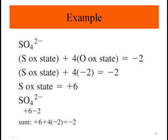We have one atom of sulfur plus four atoms of oxygen. Four times minus two is minus eight. For the total to equal minus two, sulfur must be plus six. Since sulfur is above oxygen on the periodic table, oxygen takes priority — so sulfur is plus six and four times minus two gives minus eight, and plus six plus minus eight equals minus two.